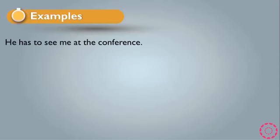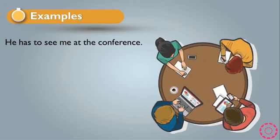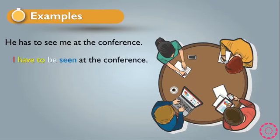Let's see an example. For example: 'He has to see me at the conference.' As you can see, we have 'has to' here, which is the modal verb, and 'me' which is the object. So in passive, 'me' becomes 'I'. We rewrite 'has to' as 'have to' because we now have 'I'. So it becomes 'I have to be seen at the conference', where 'seen' is the past participle and 'at the conference' is the complement.